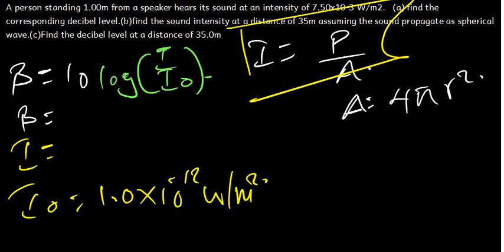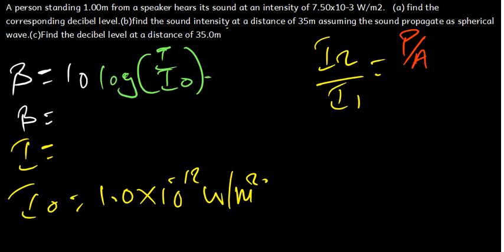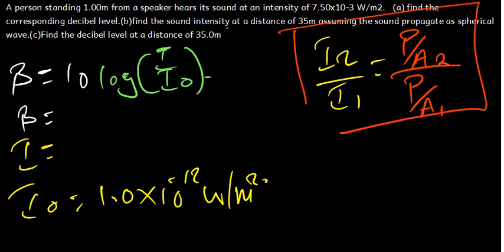When the sound propagates as a spherical wave, we can get the ratio of intensities. The ratio I₂/I₁ equals power/area₂ divided by power/area₁. The power cancels, and since the area of a sphere is 4πR², we can cancel 4π, leaving area₁/area₂ equal to R₁²/R₂².